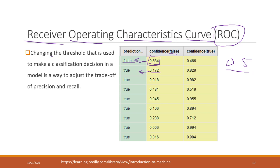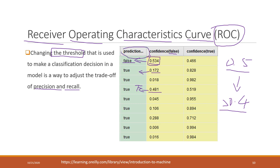Sometimes we can change the threshold to adjust the classification decisions. Sometimes we may want high precision, and sometimes we may want high recall. For example, if you change the threshold to 0.4, then as long as the probability is greater than 0.4, it will be considered false. By changing the threshold, the predicted result will be different, and both precision and recall will also change.